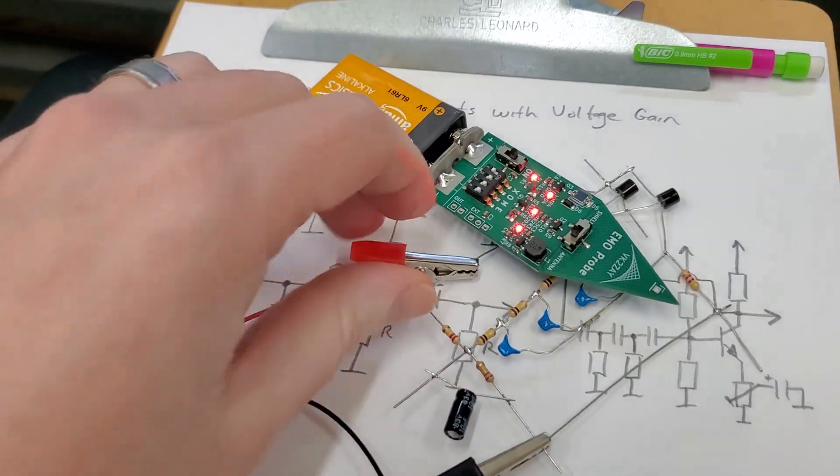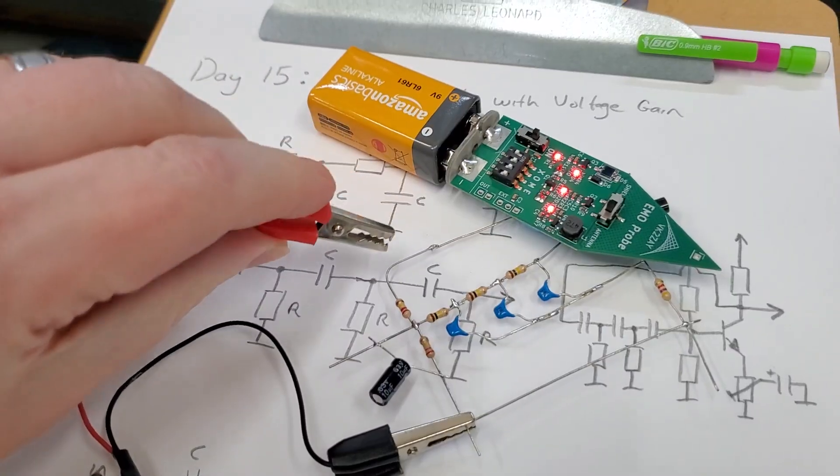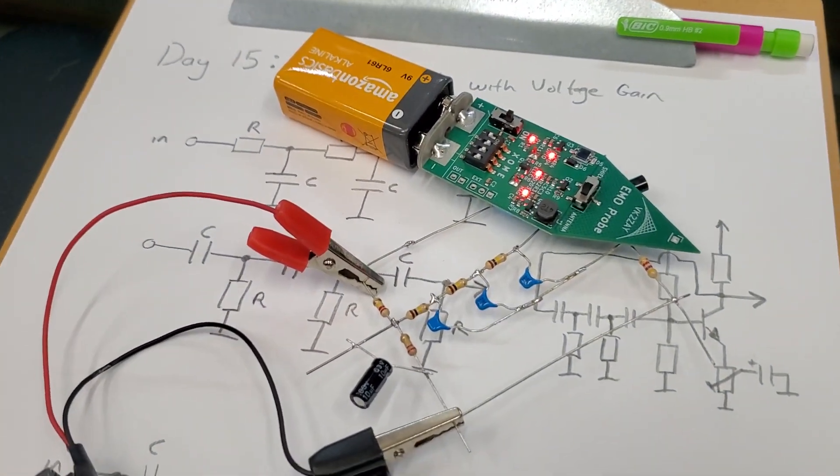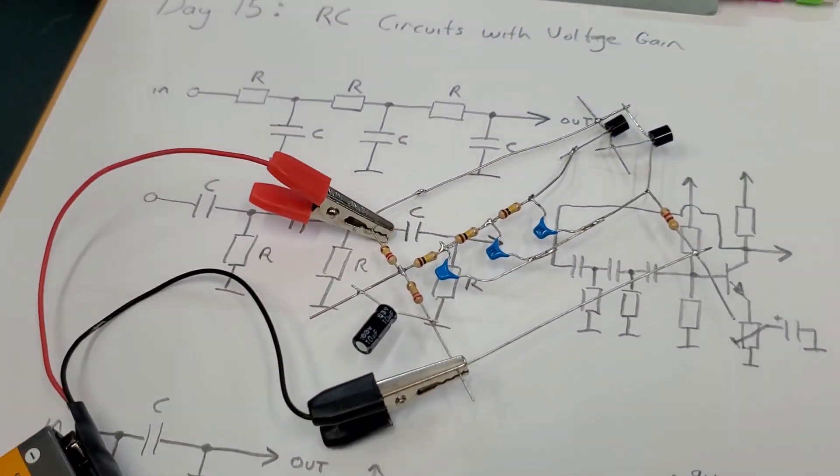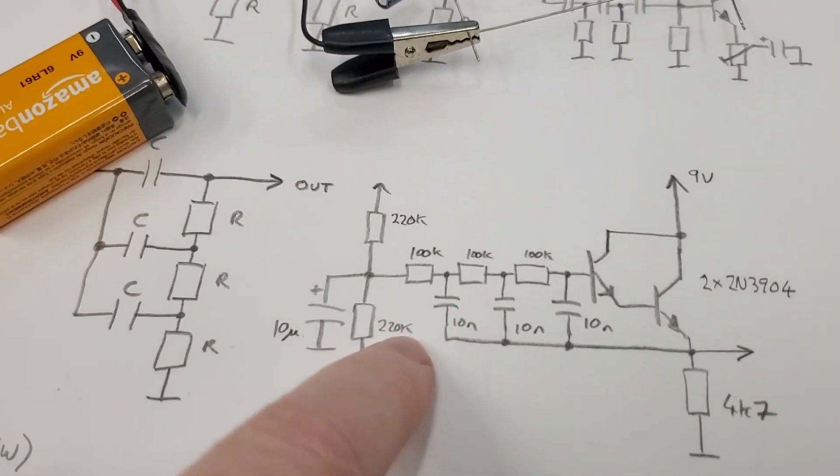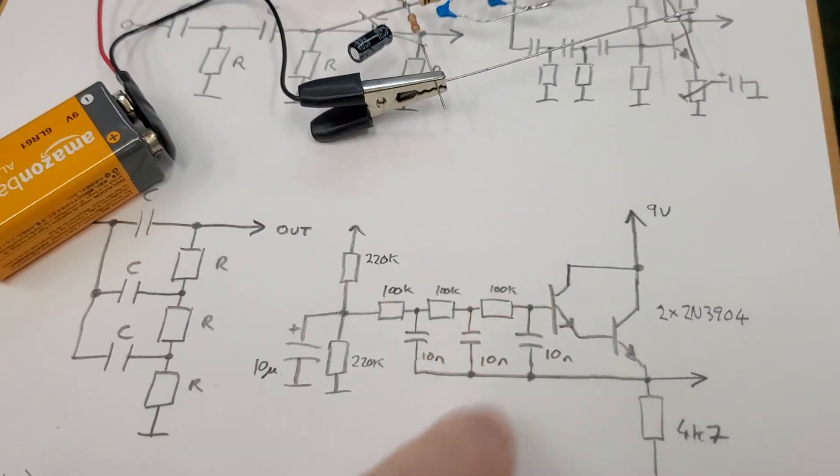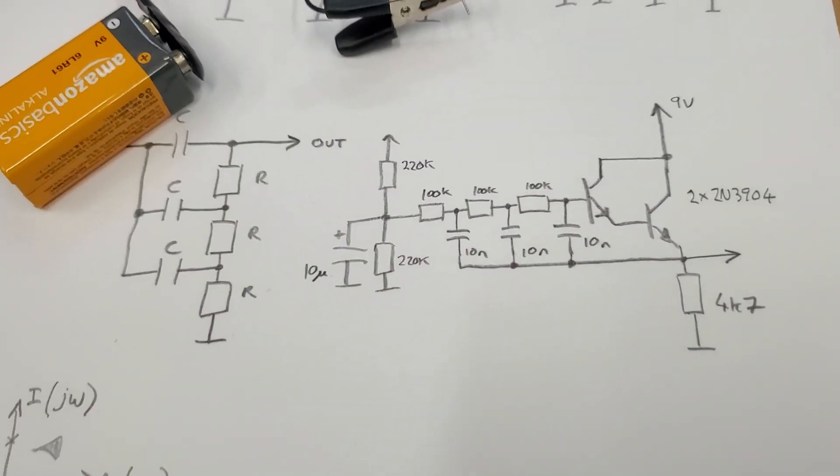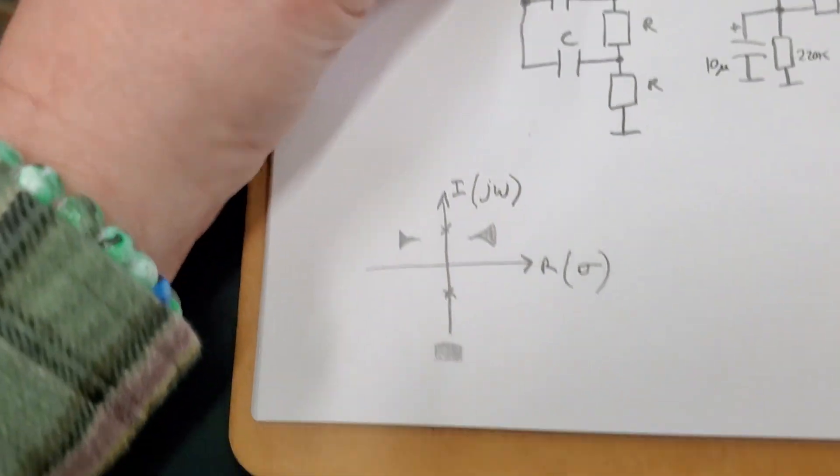If I disconnect the power, it stops oscillating. If I connect it again, you see that it takes a little while to start up, so we're only just meeting the Barkhausen criteria. It actually takes a little while for the oscillation to start up. If you do the math, the gain through this network is very small, it's like 1.0 something, but it just makes up for the loss through the emitter follower.